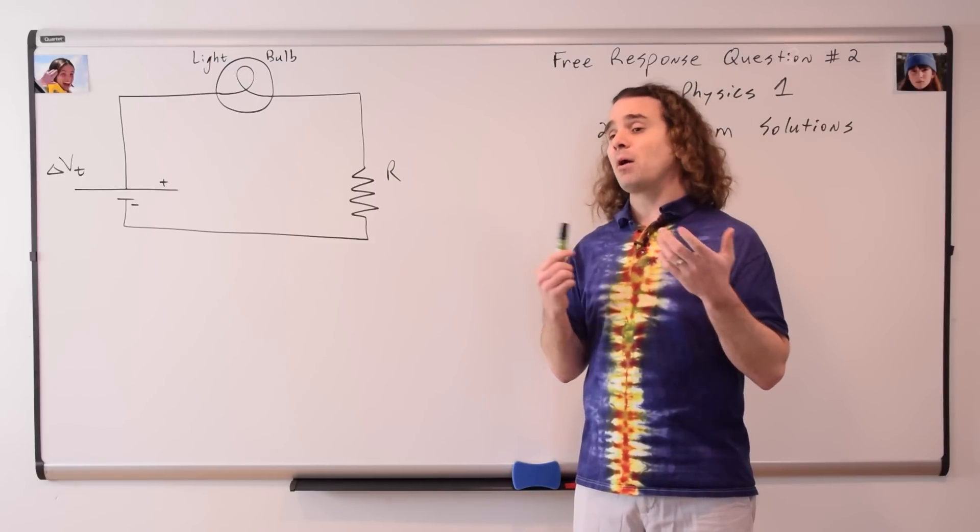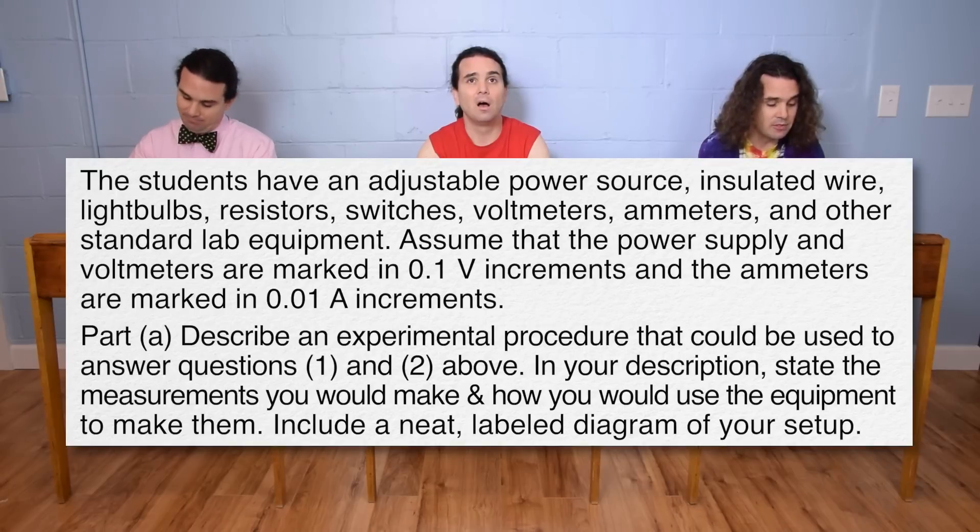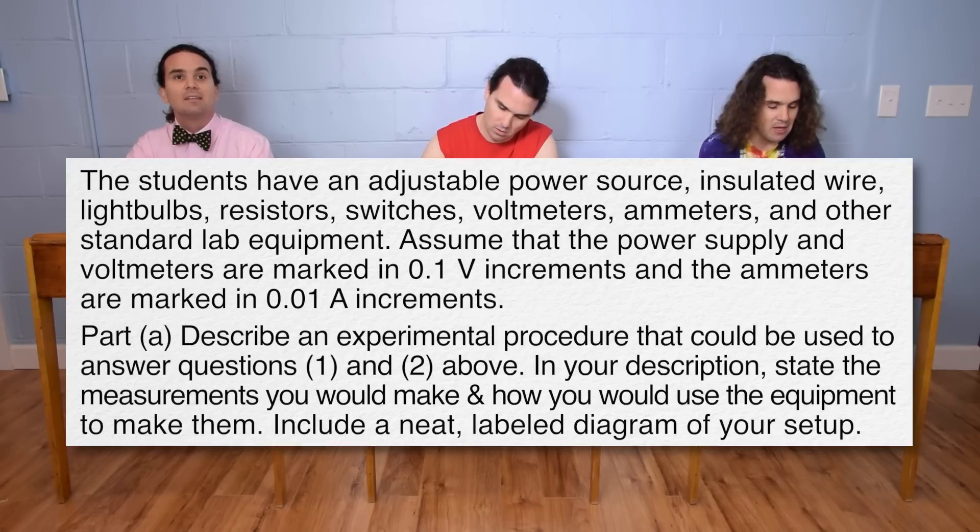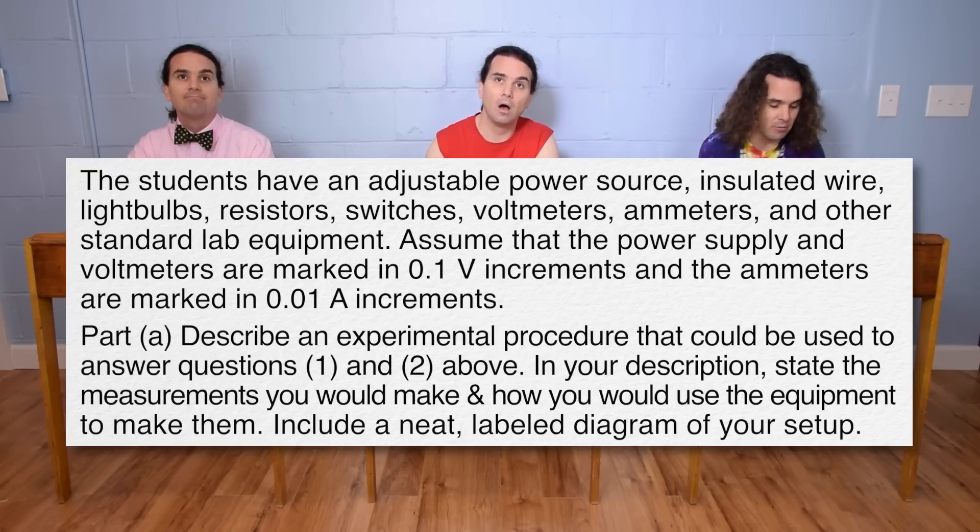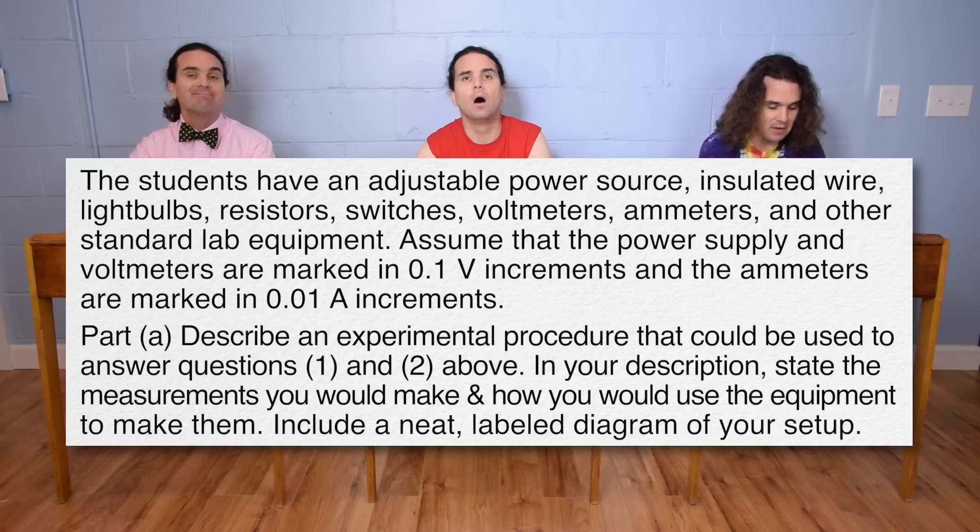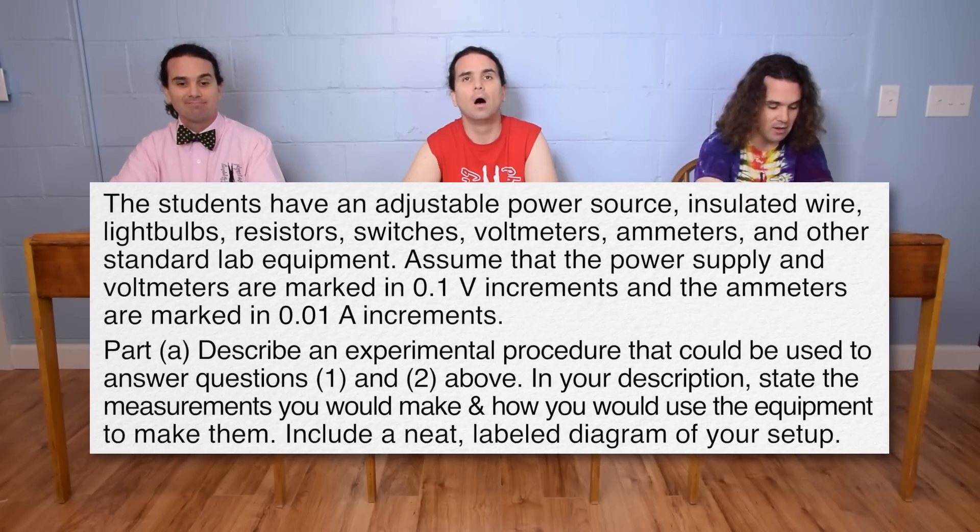Bo, could you please read through part A? The students have an adjustable power source, insulated wire, light bulbs, resistors, switches, voltmeters, ammeters, and other standard lab equipment. Assume that the power supply and voltmeters are marked in 0.1 volt increments and the ammeters are marked in 0.01 amp increments. Part A: Describe an experimental procedure that could be used to answer questions one and two above. In your description, state the measurements you would make and how you would use the equipment to make them. Include a neat labeled diagram of your setup.